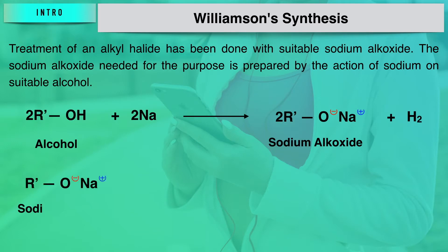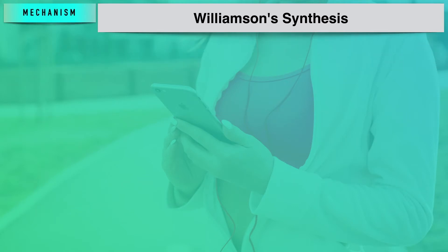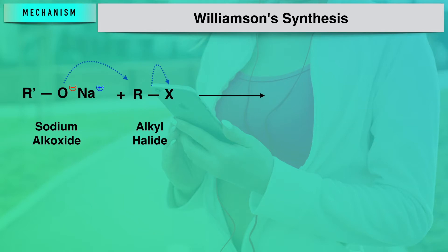This reaction involves nucleophilic displacement — that is, substitution of the halide ion from the alkyl halide through an SN2 mechanism. In the alkyl halide, halogen being more electronegative pulls electrons toward itself, creating a partial negative charge on halogen and a partial positive charge on the alkyl group. The alkoxide group then attacks the alkyl group, resulting in formation of an ether, and sodium halide is liberated.